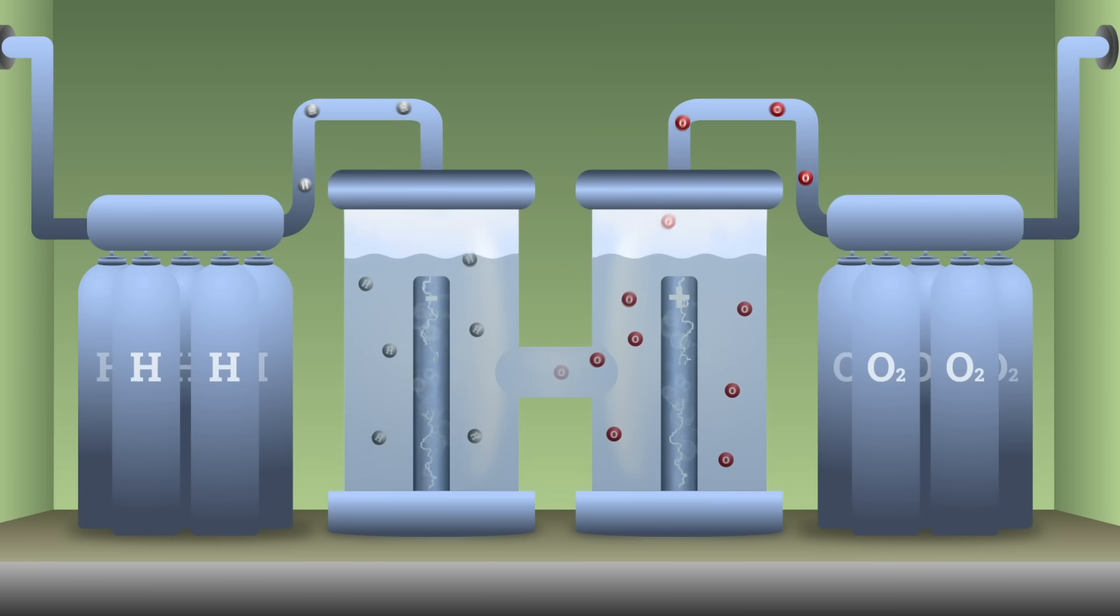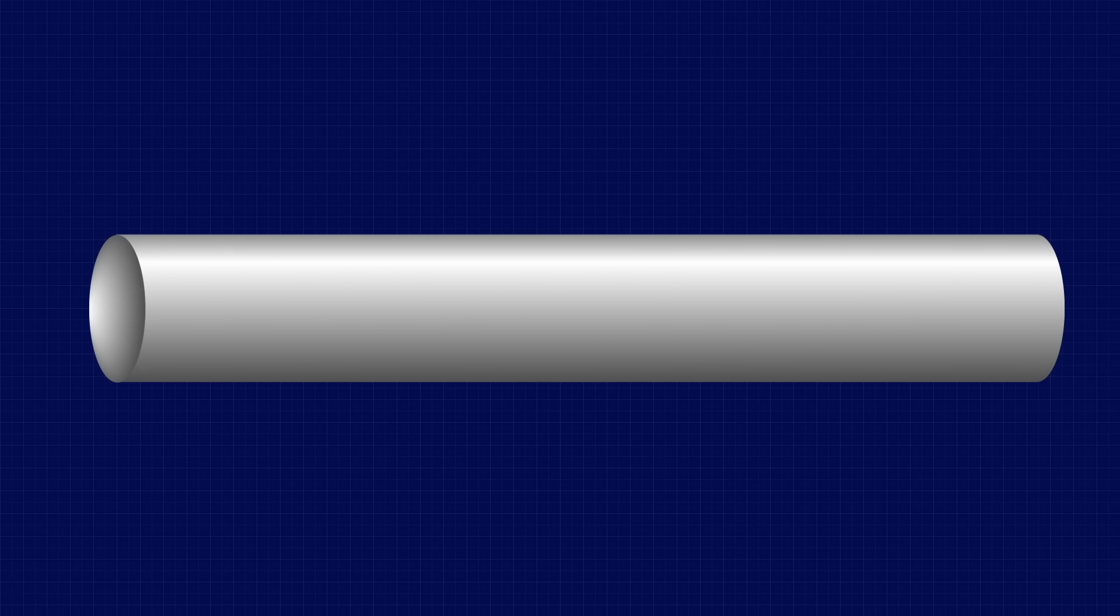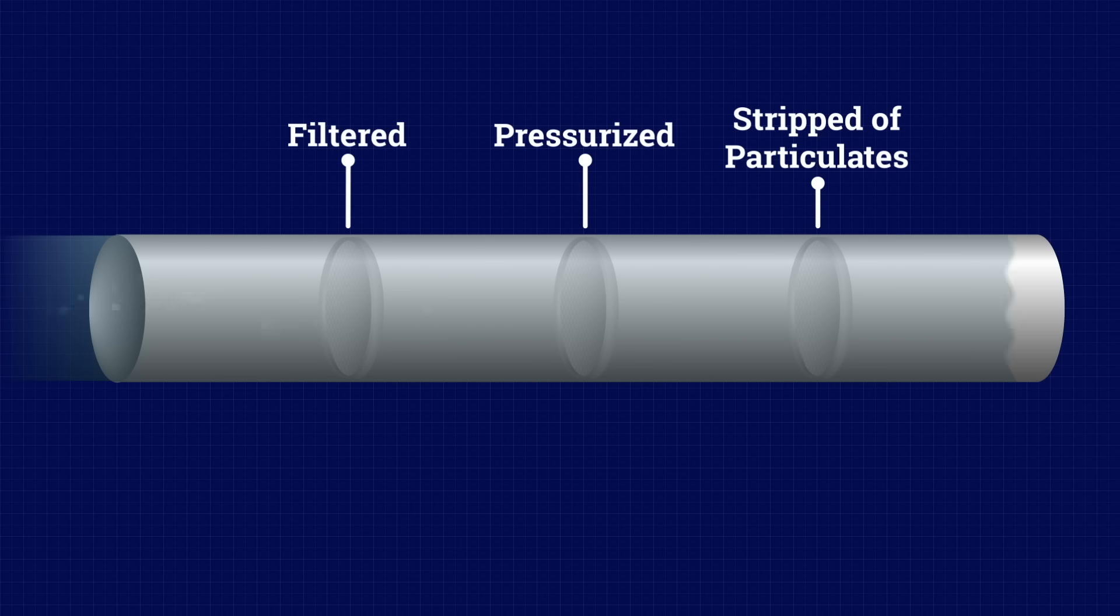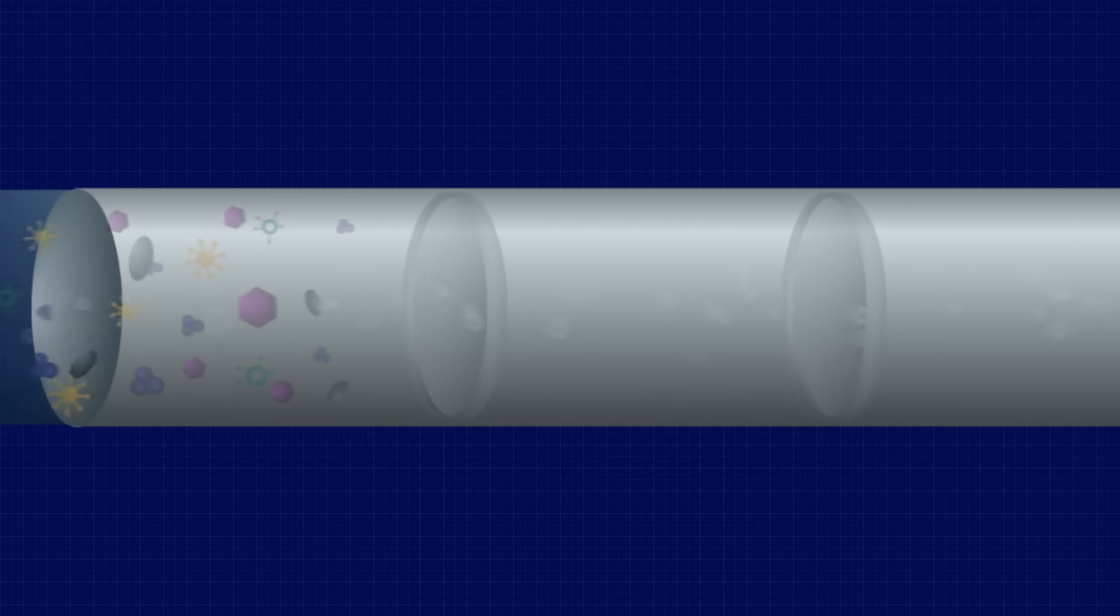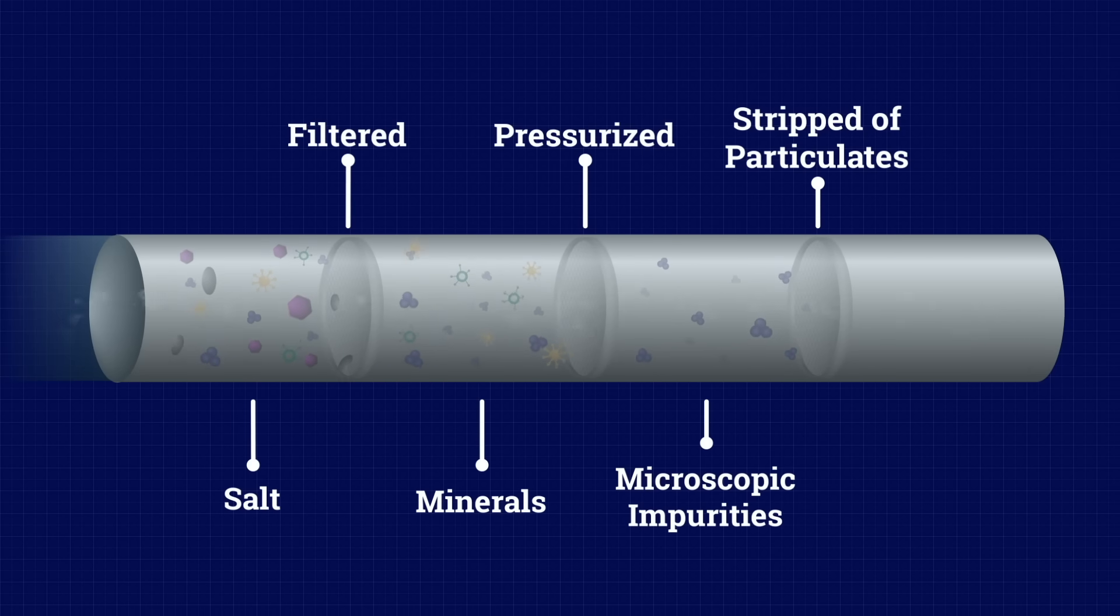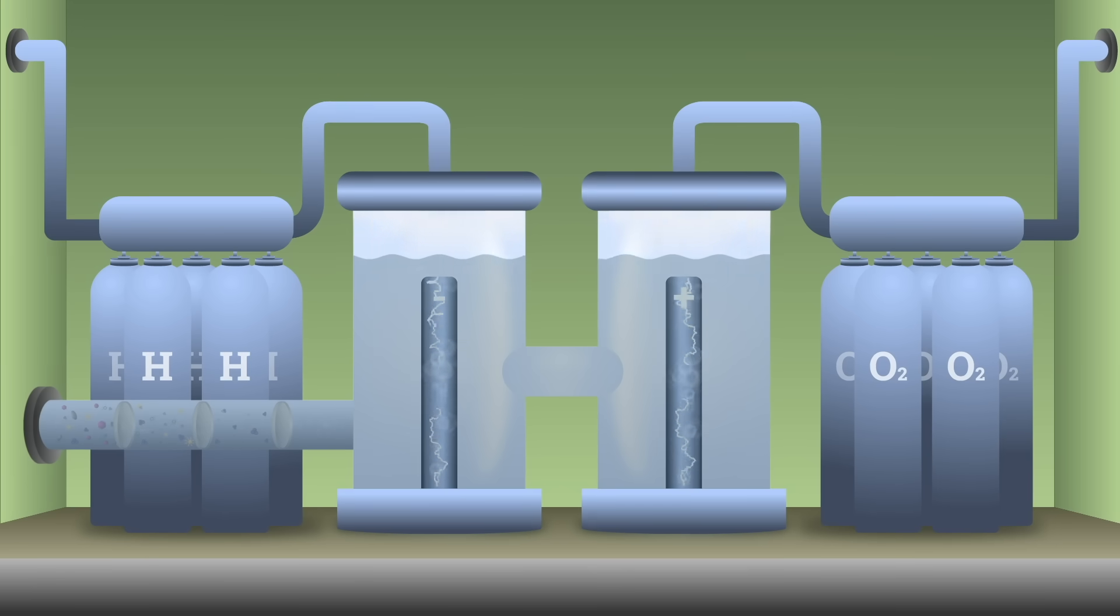To supply fresh oxygen, the submarine makes oxygen by using a process called electrolysis. Seawater is brought in from outside the hull, filtered, pressurized, and stripped of particulates. Before anything touches the electrolysis system, it passes through a series of desalination filters and deionizers to remove salt, minerals, and microscopic impurities. The goal is to deliver pure water. Chemically stable, clean, and ready to be split.